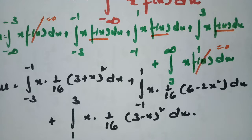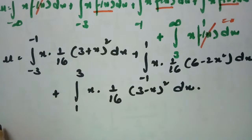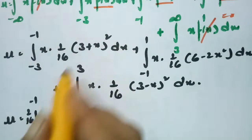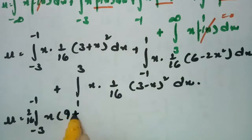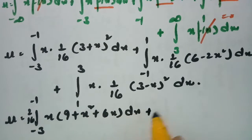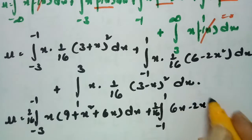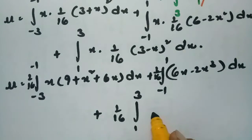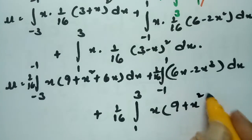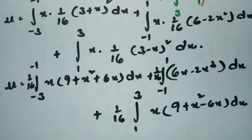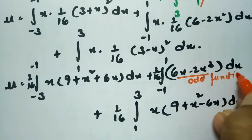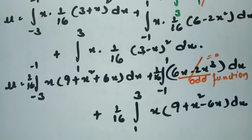Note that the integrand x·(6 - 2x²) = 6x - 2x³ is an odd function on the symmetric interval [-1, 1], so that middle integral equals 0. Expanding the other two: for -3 to -1, multiplying x by (3 + x)² gives 9x + 6x² + x³, and for 1 to 3, multiplying x by (3 - x)² gives 9x - 6x² + x³.